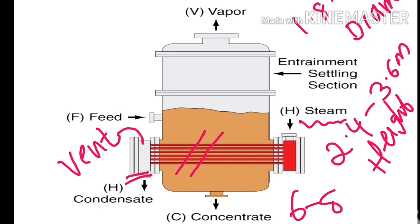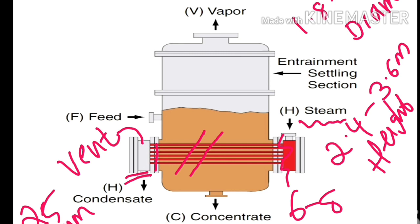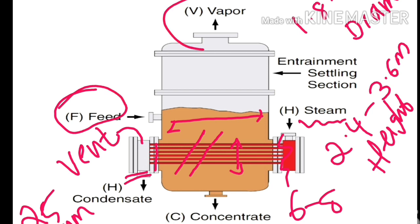The 6 to 8 stainless steel horizontal tubes are arranged in the steam compartment. These tubes protrude about 25 millimeters beyond the tube sheet on both ends. The width of the steam compartment is usually half the diameter of the body. There is also a feed inlet and a vapor outlet present on the apparatus.